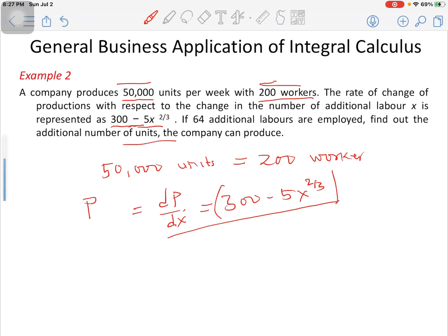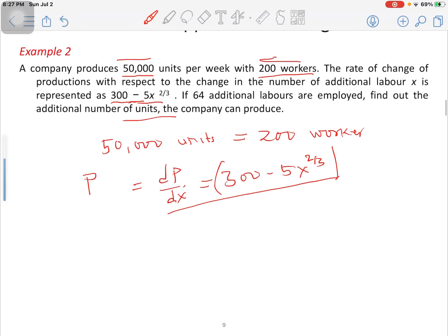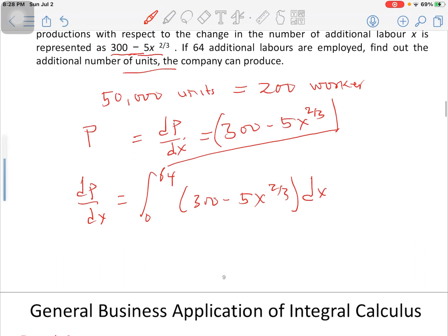We want the accumulation of whatever changes will come when we are moving from 0 to 64. So in this case, our limit is going to be the integral of dP/dx equals the integral from 0 to 64 of the function 300 minus 5x to the power 2/3, and it is being integrated with respect to x.